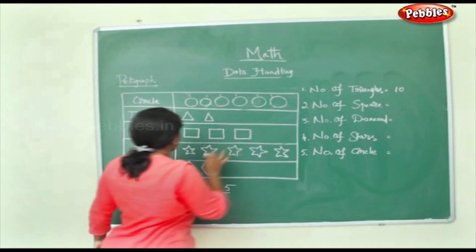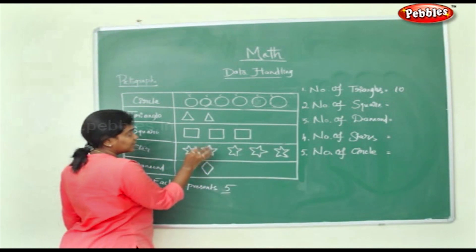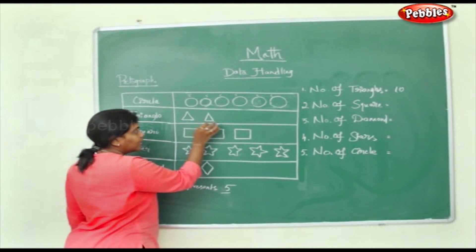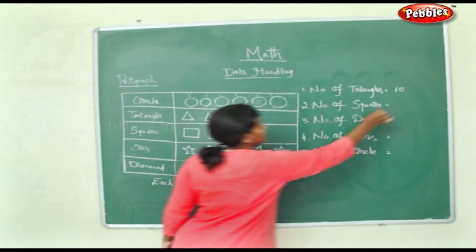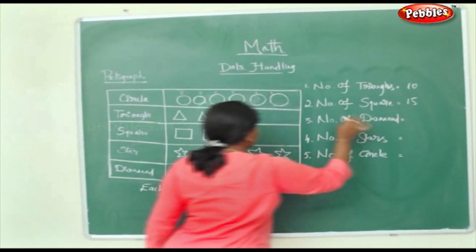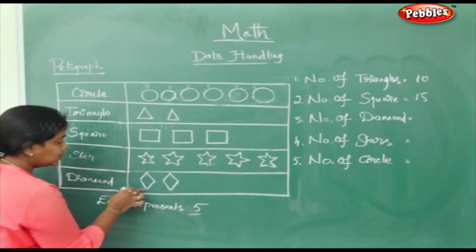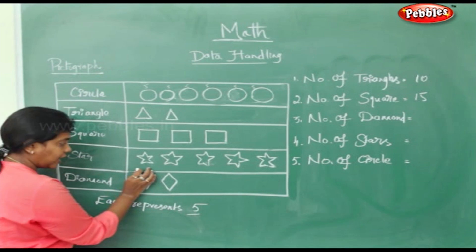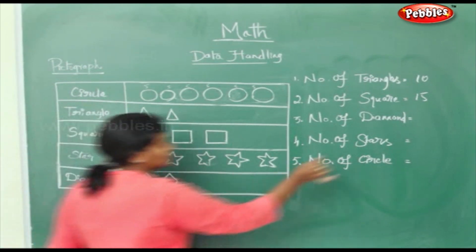Number of squares — here are the squares. Each represents 5: 5, 10, 15. So 15 squares. Number of diamonds — where are the diamonds? There are 2 diamonds, each representing 5: 5, 5. So 10 together.